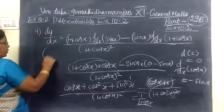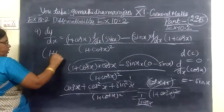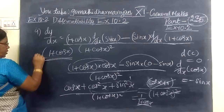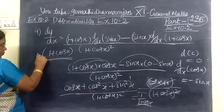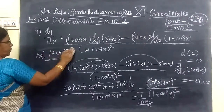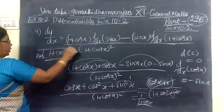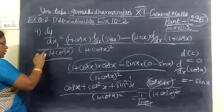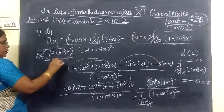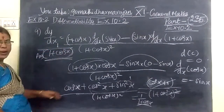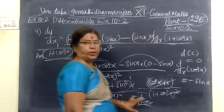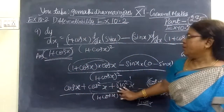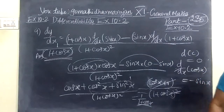So cos x plus 1 gives 1 plus cos x, and that cancels. So the final answer is 1 divided by (1 plus cos x). The answer for the numerator is 1 by 1 plus cos x. Hope you understand. Thank you.